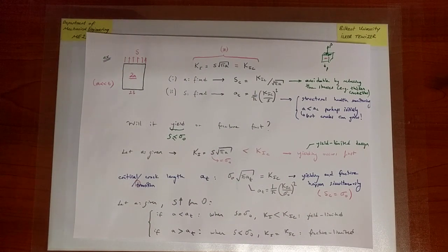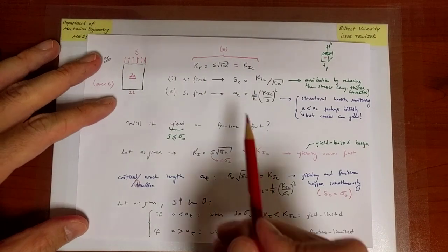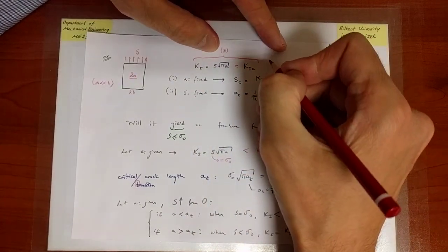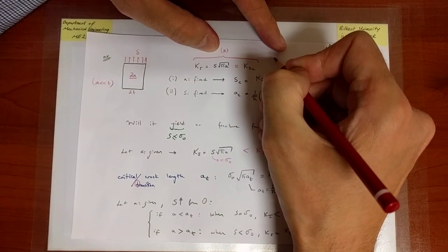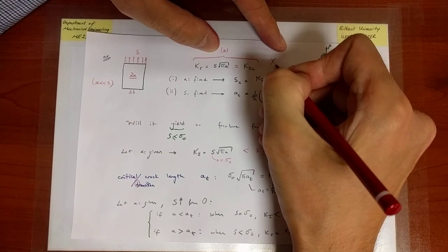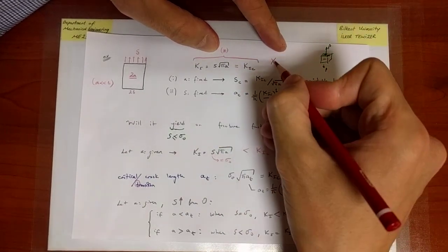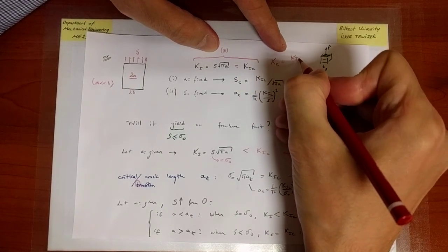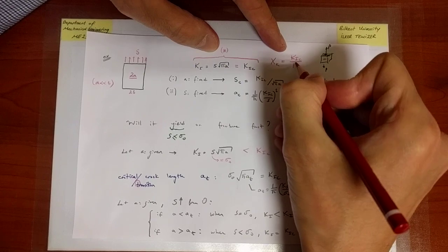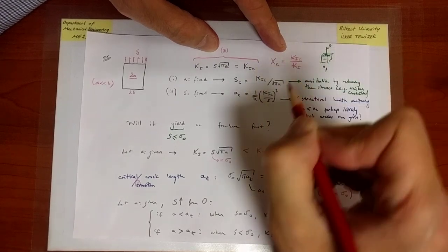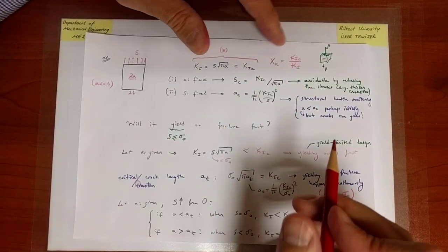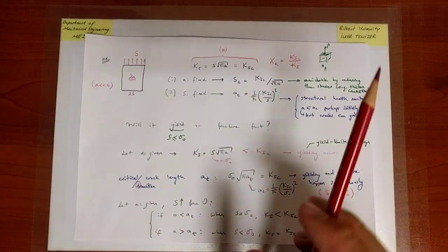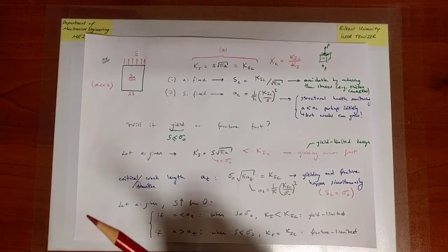Finally, for any given loading we can define a safety factor on the stress intensity factor, equal to the largest allowable value divided by the actual value — the standard definition of a safety factor. We can also define safety factors on crack size and load, but the one on the stress intensity factor is the one we typically use.